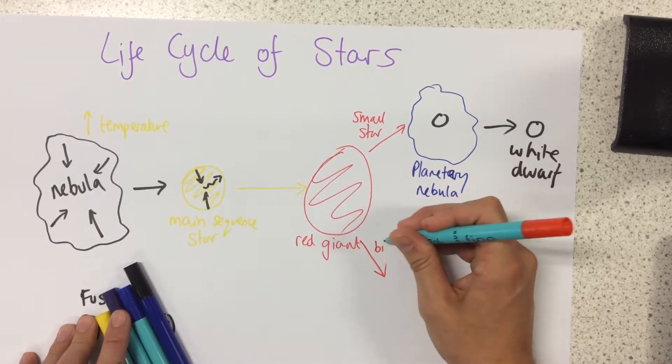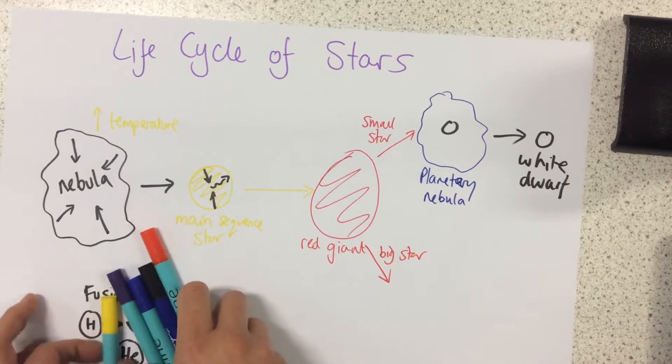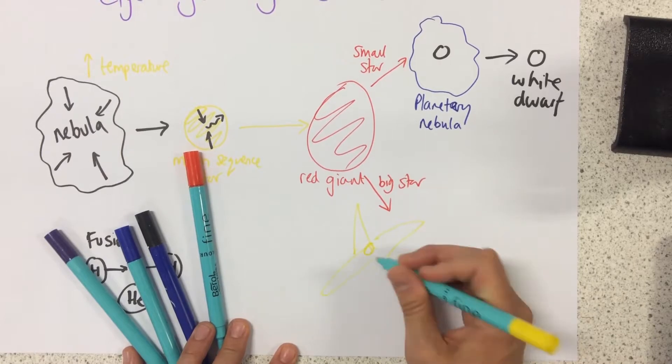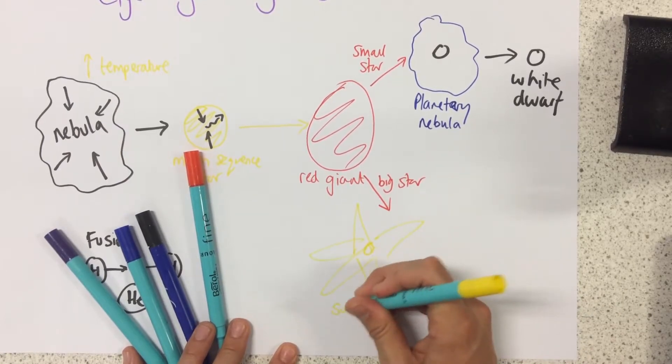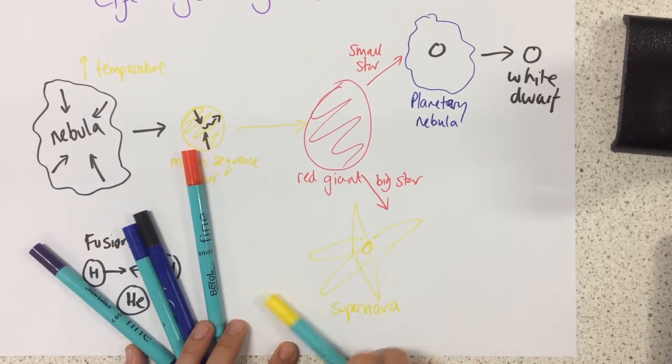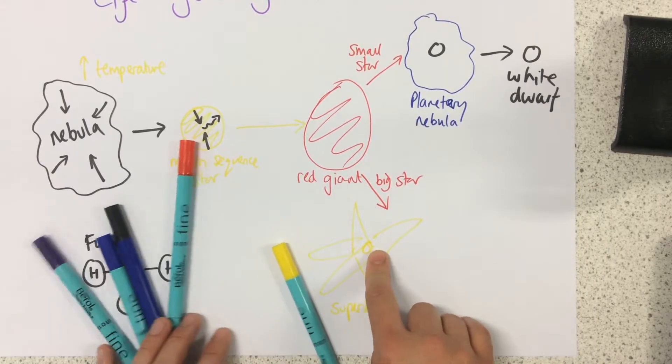However, with big stars we get something else happening, something a bit more exciting. We get a supernova. A supernova is when the stars start to glow brightly again and they release an enormous amount of energy.